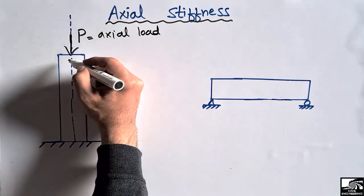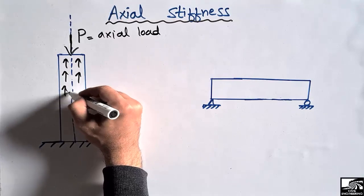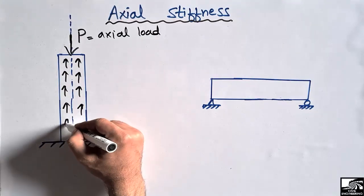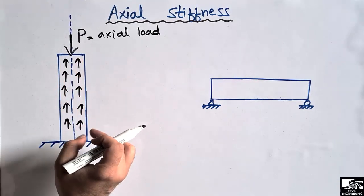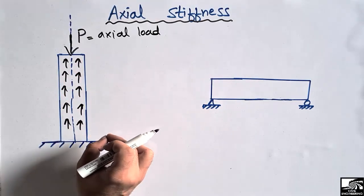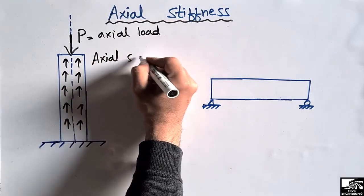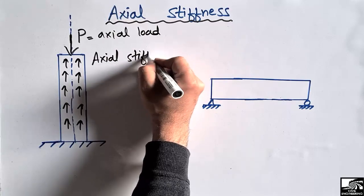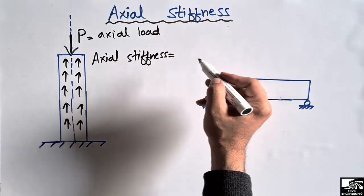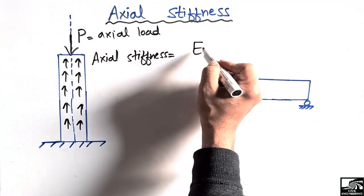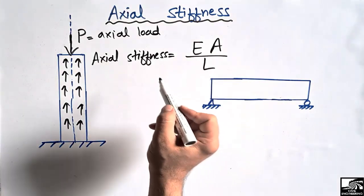Due to this axial load acting on the column, there will be some reaction and some resistance to this incoming load. This resistance to the incoming axial load is known as the axial stiffness of the column. So axial stiffness is actually the resistance to the axial load.